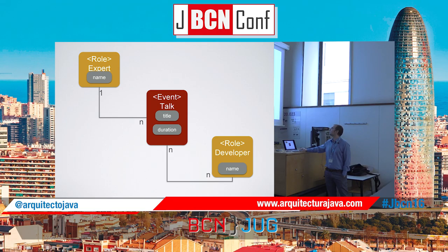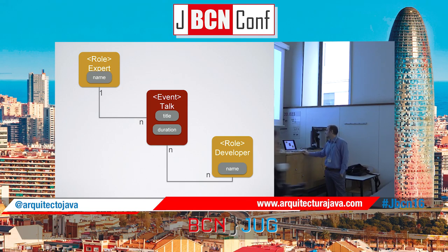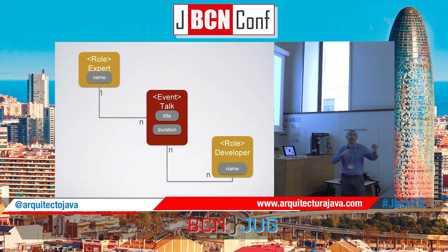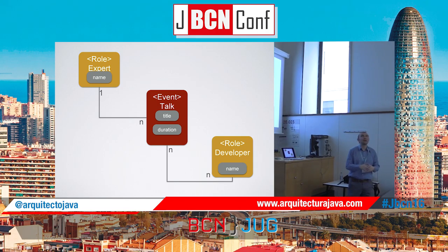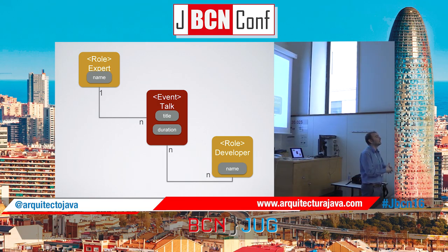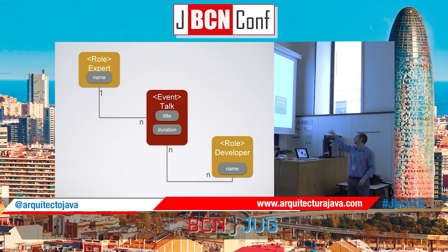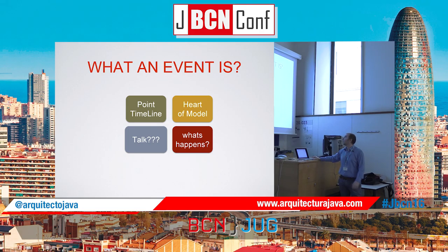My new model: I have a role for expert, a role for developer. A lot of people look at this and say it's the same model — maybe more colorful or beautiful with stereotypes — but it doesn't add any value to the model. You need to understand how to use these analysis patterns in your model. I have a role, an event, and another role with developer and expert. What is an event? For me, this is the key to how to build a solid model.